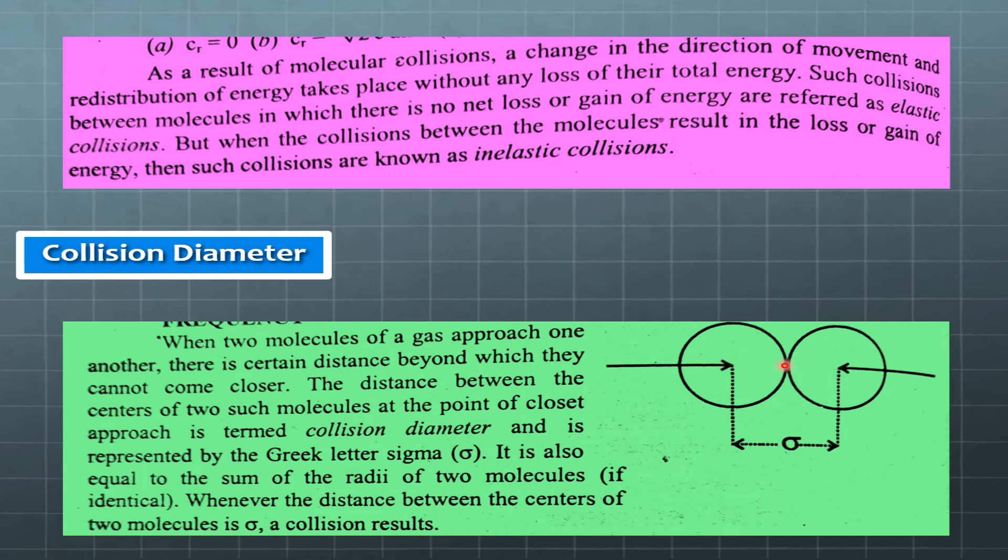The centers - this center and this center - the distance between the centers of two such molecules at the point of closest approach is termed collision diameter. It is represented by the Greek letter sigma. It is also equal to the sum of the radii of two molecules if identical. Whenever the distance between the centers of two molecules is sigma, a collision results. This was about collision diameter.